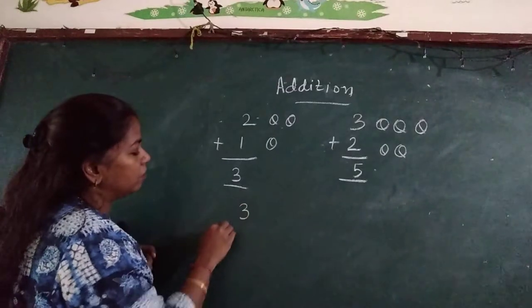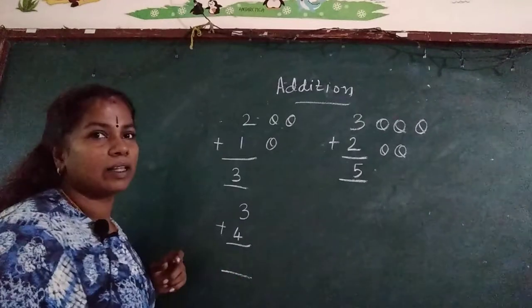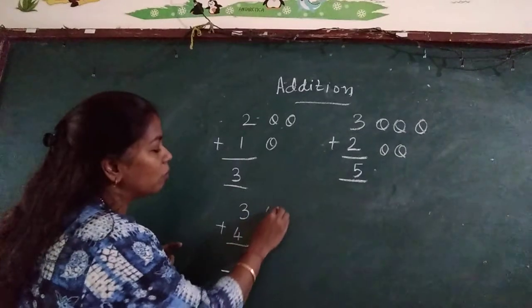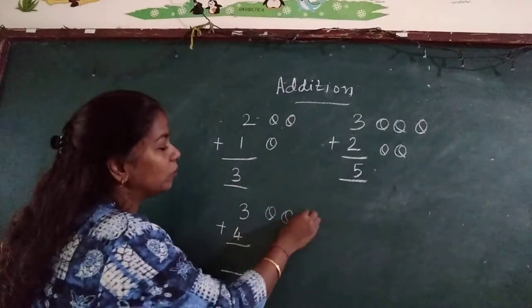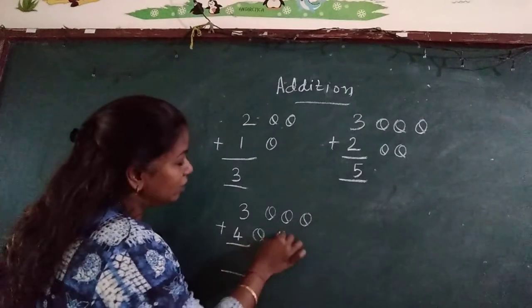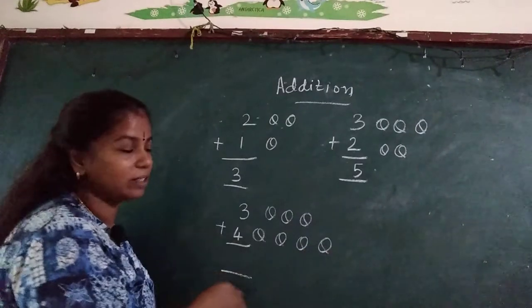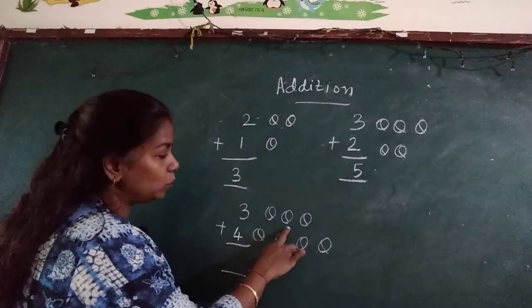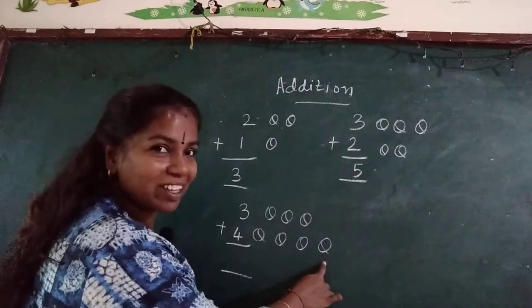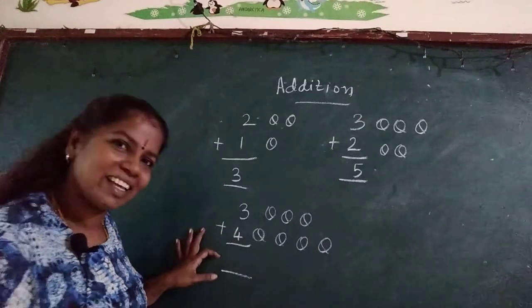Now 3 plus 4. How will you do it? For 3, how many balls will you make? 1, 2, 3. For 4, how many balls will you draw? 1, 2, 3, 4. Now we will count: 1, 2, 3, 4, 5, 6, 7. So 3 plus 4 is equal to 7.